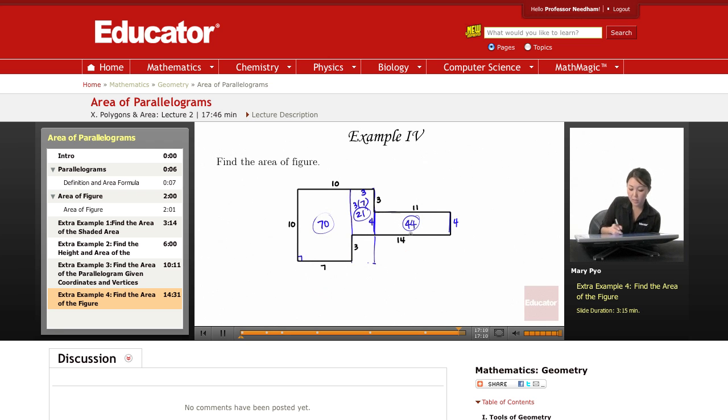So now all we have to do is add up these numbers: 70 plus 44 plus 21. Okay, we have three rectangles, we're adding up three numbers. So 4 plus 1 is 5, 7 plus 4 is 11 plus 2 is 13. That means the area of this figure here is going to be 135 units squared. Okay, and that's it for this lesson. Thank you for watching educator.com.